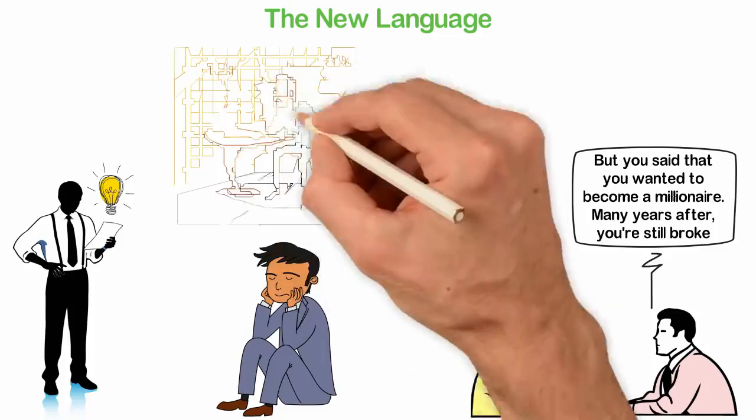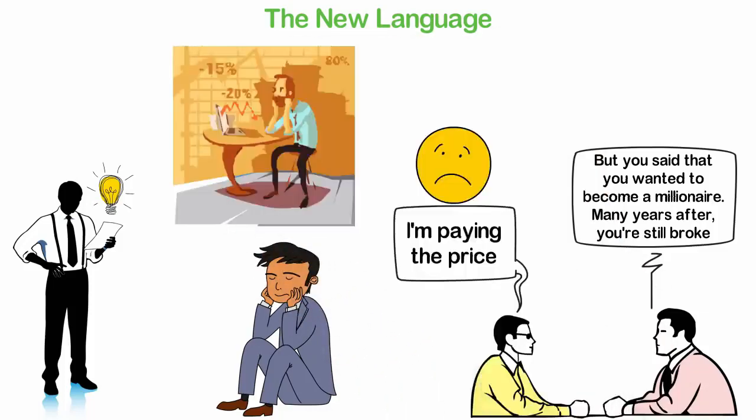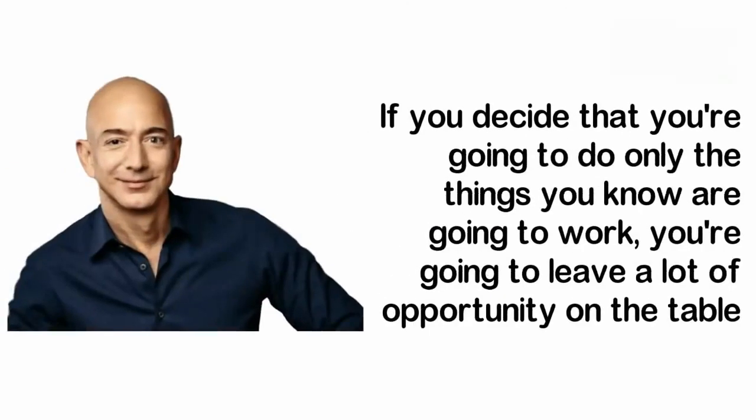When you think about achieving success, think about learning a new language, and this will help you to see mistakes as a normal thing. If you decide that you're going to do only the things you know are going to work, you're going to leave a lot of opportunity on the table.